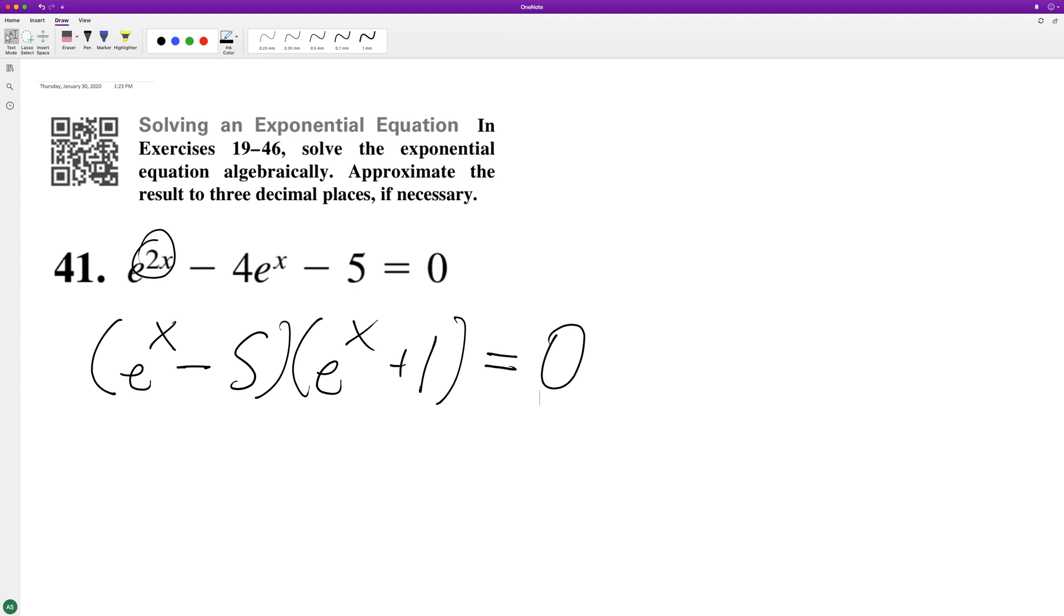And then what we'll have here is solve for each of these. So we can actually get this to equal zero. What we need to do here is take the natural log. So e raised to the x minus five equals zero. e raised to the x equals five. Take the natural log of both sides.